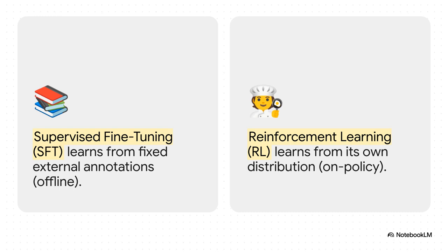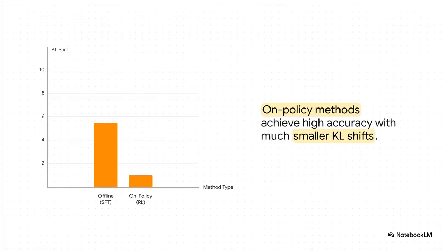SFT, supervised fine-tuning, is like learning from a fixed recipe book. It's given a perfect set of examples, and its only job is to copy them as closely as possible. But RL is what's called on policy. It's more like a chef in the kitchen, tasting and adjusting as they go. It learns from its own attempts, sampling from what it currently thinks is right. And that small difference in philosophy has a massive impact.